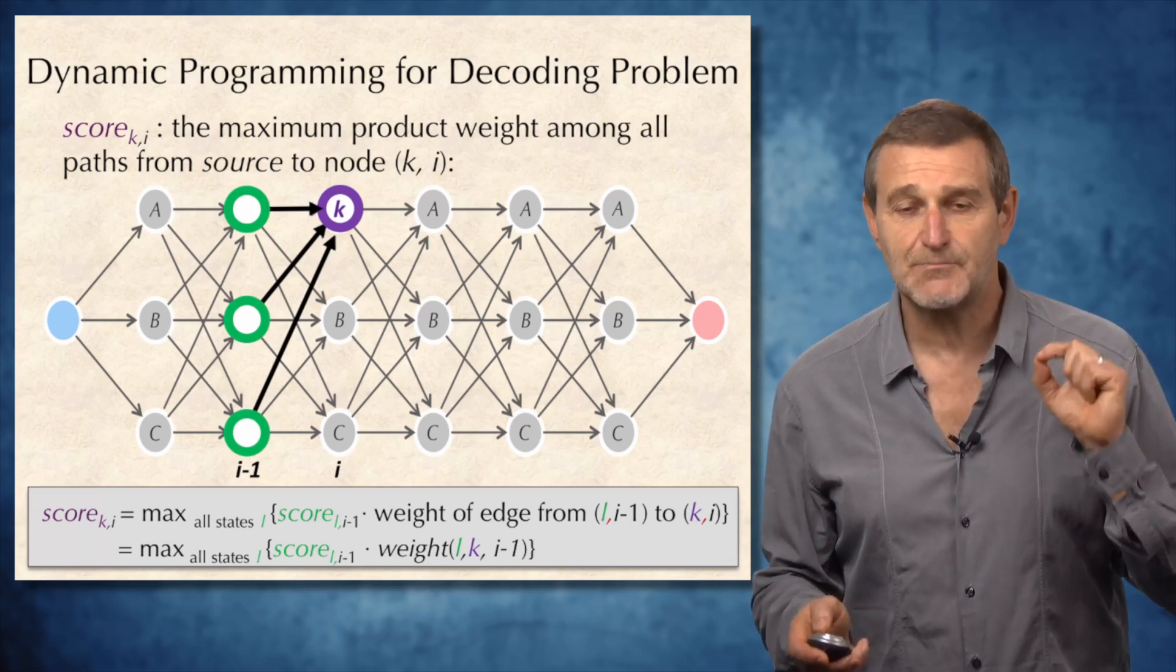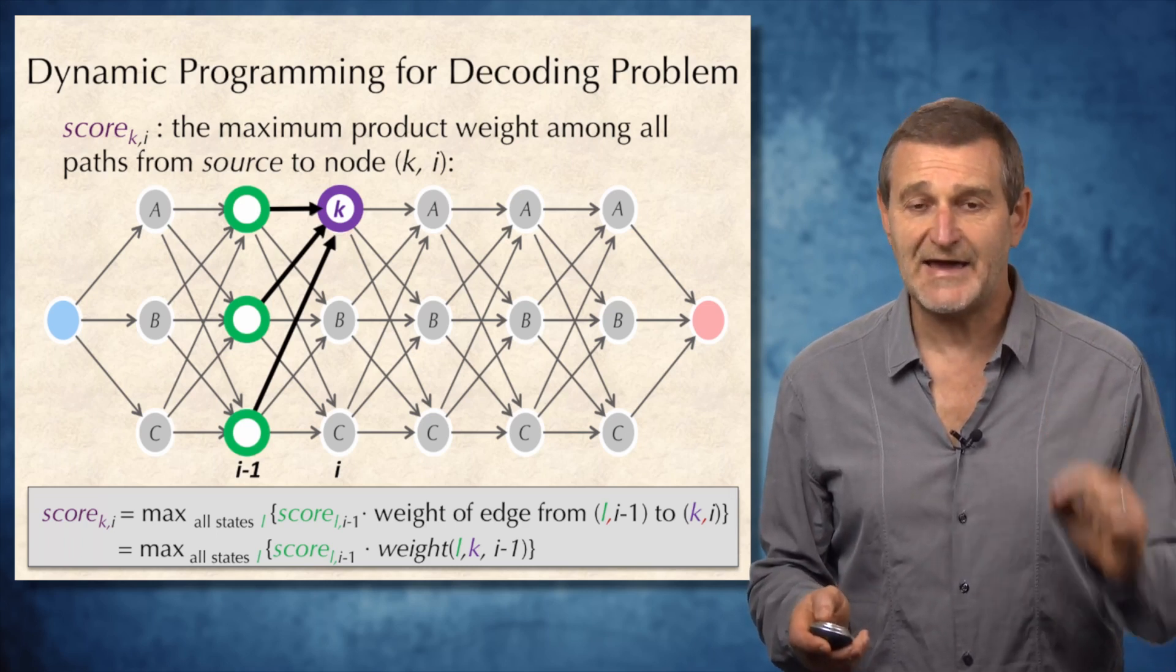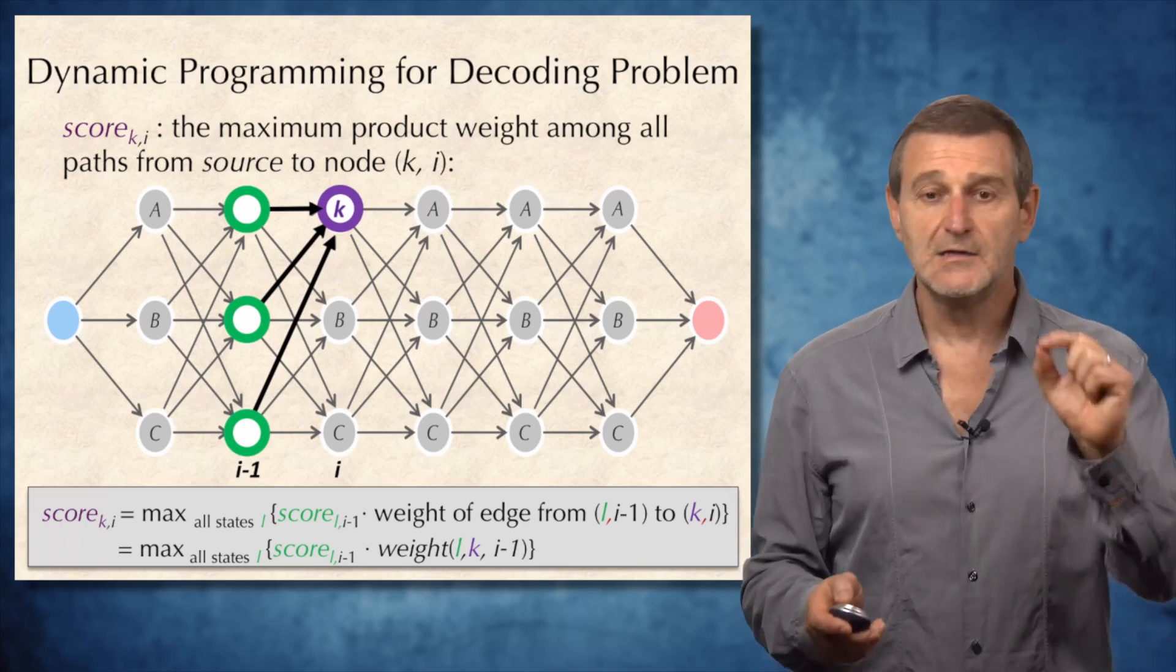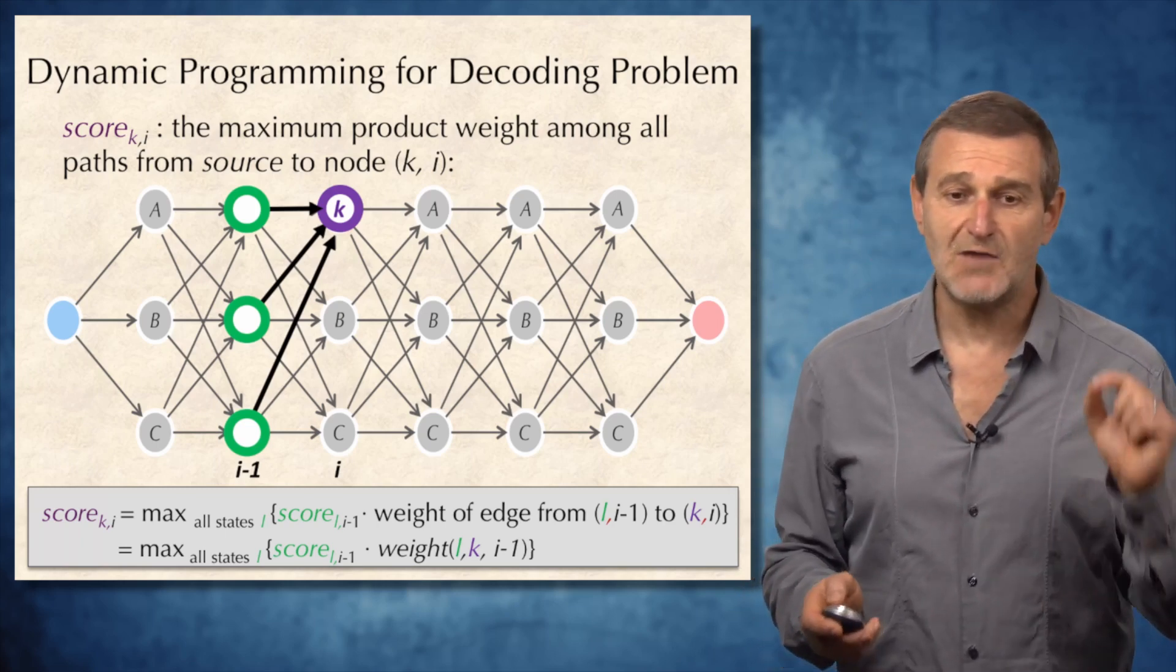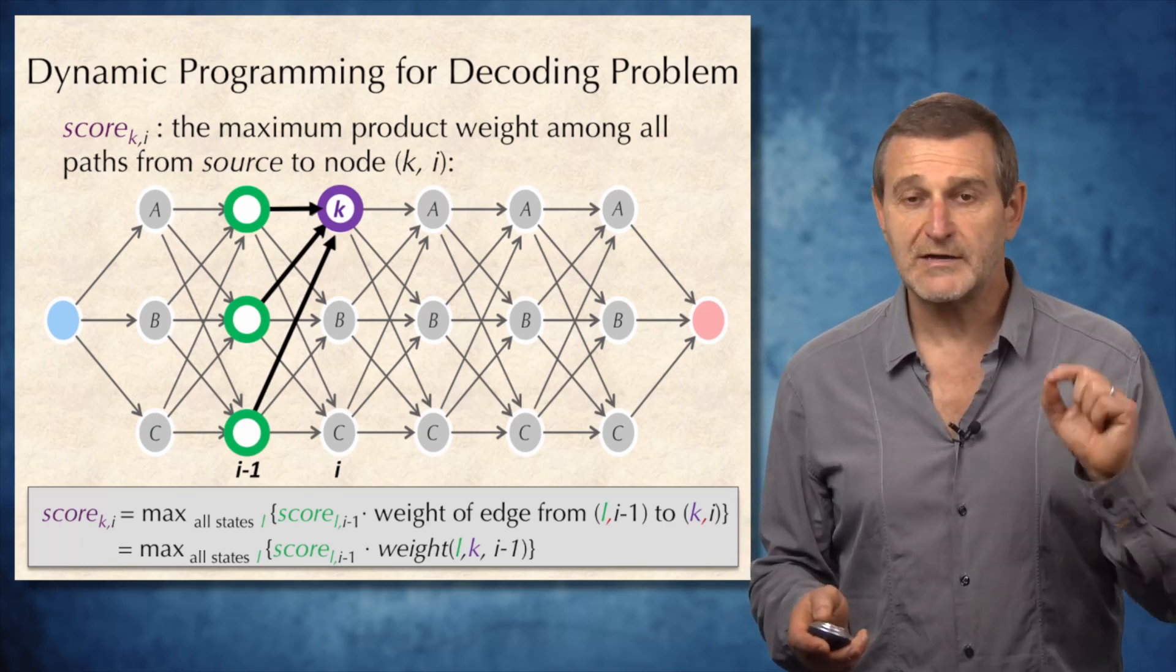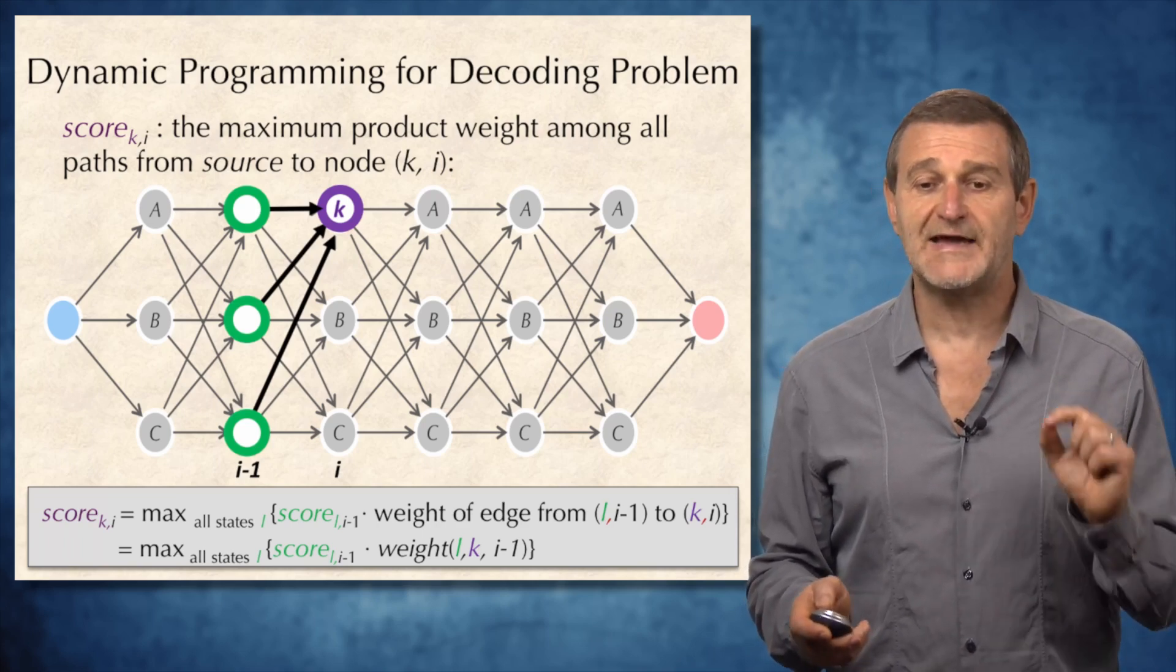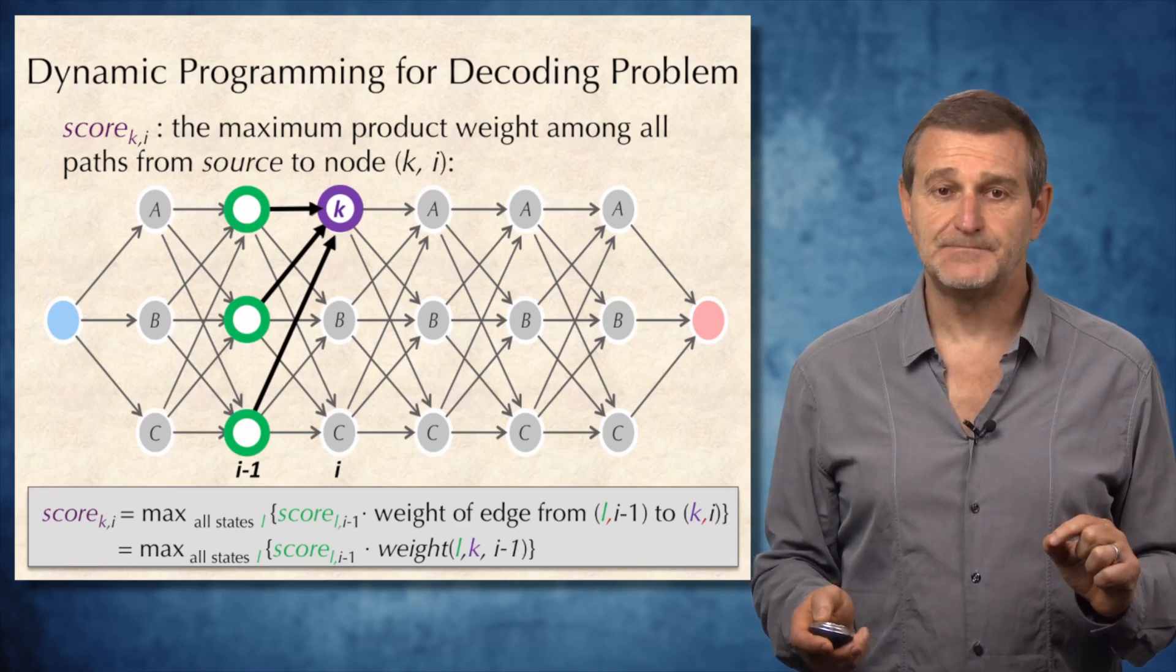Of score_L,i-1 in the previous column, multiplied by the weight of the edge from the node in the previous column, node L, to the node K in column i, which is in other words maximum through all states, the score in the previous column multiplied by the weight of the edge L,K,i-1.